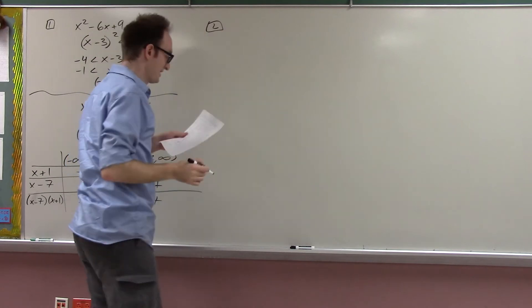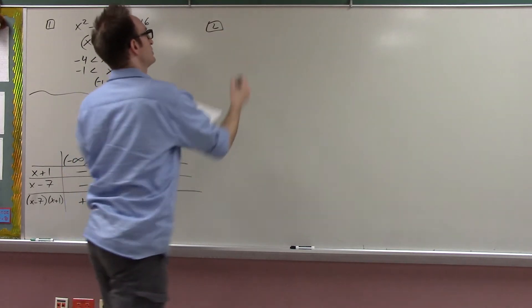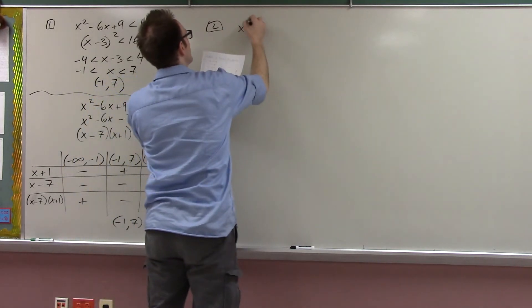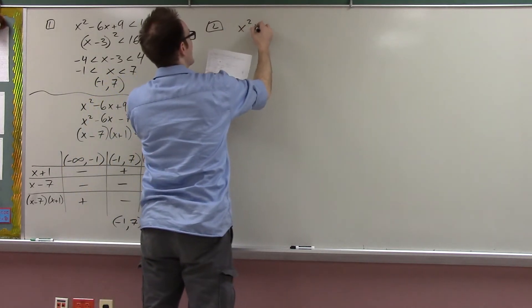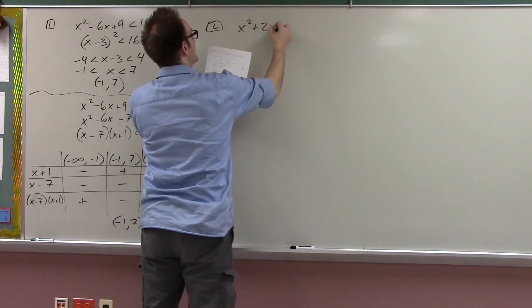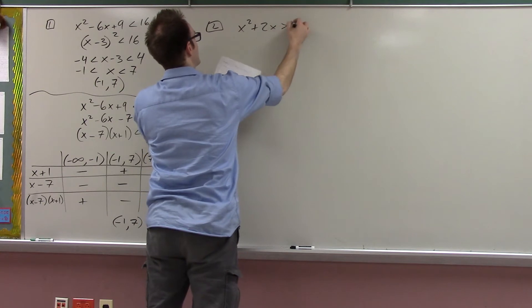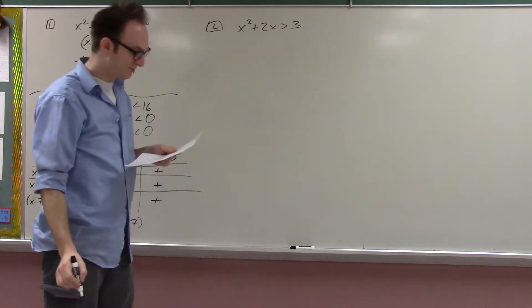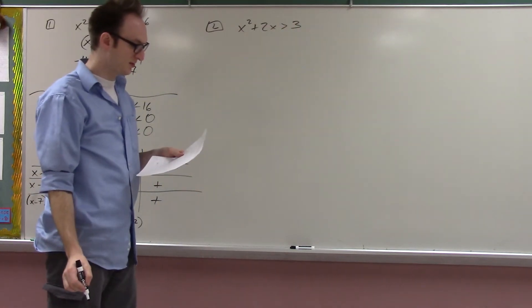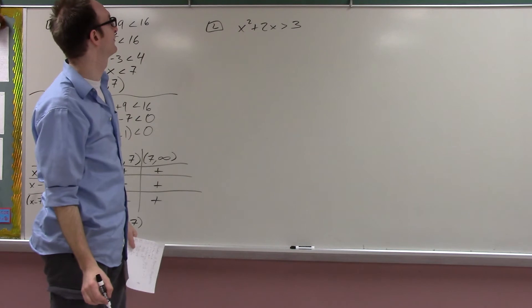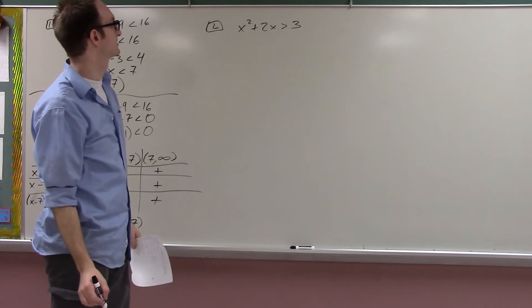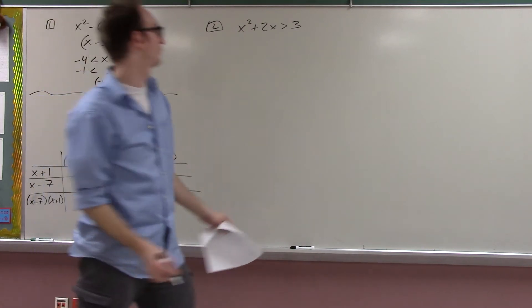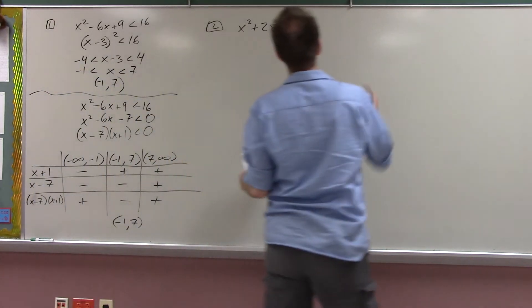Let's do a couple more. This is definitely a watch-at-two-times-speed situation. x squared plus 2x is greater than 3. This is basically the same thing, so solve this.